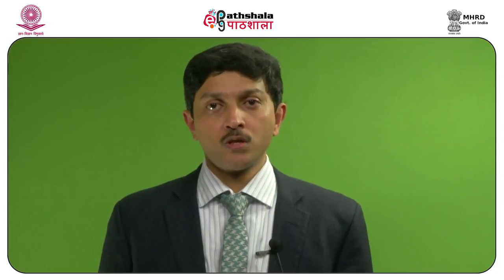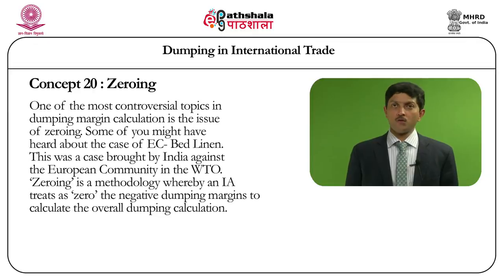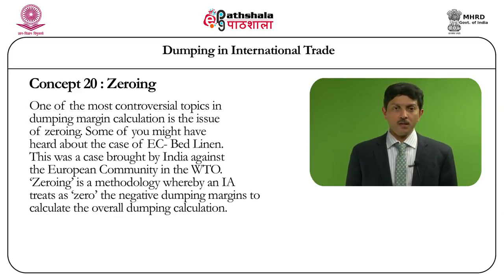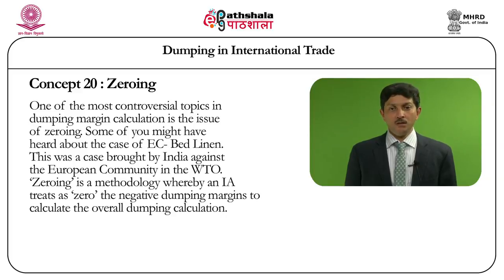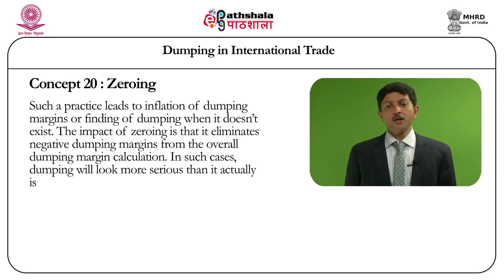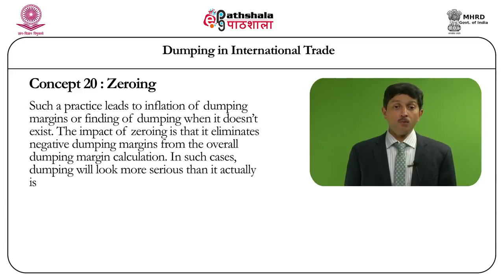One of the most controversial topics in dumping margin calculation is the issue of zeroing. This is a matter that was taken up before the WTO panel and the Appellate Body on numerous occasions. One case is EC Bed Linen, a case brought by India against the European Community in the WTO back in 2001. Zeroing is a methodology whereby the investigating authority treats negative dumping margins as zero in calculating the overall dumping margin. Such a practice leads to inflation of dumping margins, finding dumping when it does not exist. The impact of zeroing is that it eliminates negative dumping margins from the overall dumping margin calculation, making dumping look more serious than it actually is.